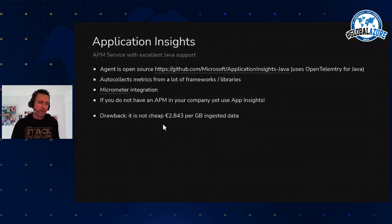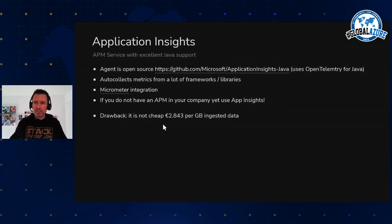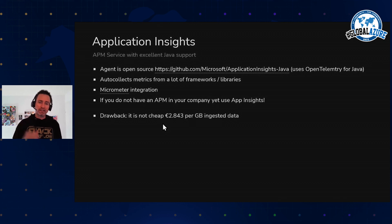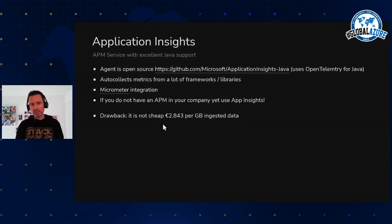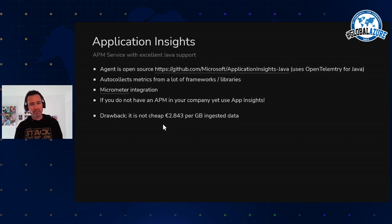The only drawback with Application Insights: it's not that cheap. You pay around €3 per gigabyte of ingested data. The problem is that the ingested data is JSON unzipped, so all the metrics sent are via JSON — a lot of overhead. With most of our applications, the main pricing point in our monthly bill is Application Insights — it's around the same cost as the database and the compute together.